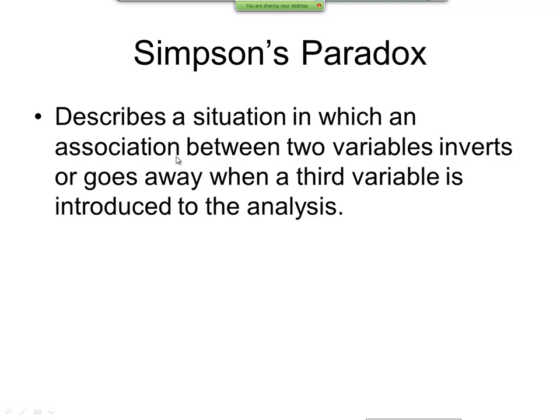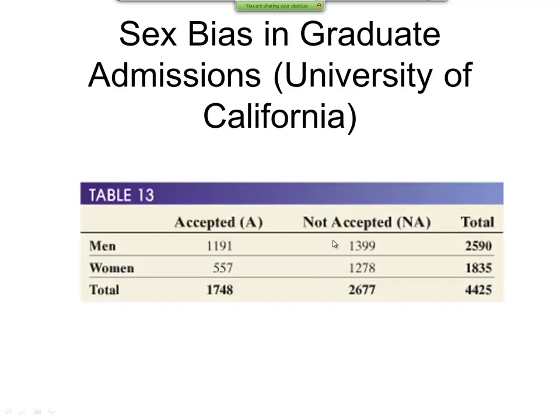Now let's talk about Simpson's paradox. This describes a situation in which an association between two variables inverts or goes away when a third variable is introduced to the analysis. And this example that the book has is excellent. And I would recommend you read it and the full details of it. I'm just going to give a highlight here. But this was sex bias in graduate admissions, University of California. They got sued.